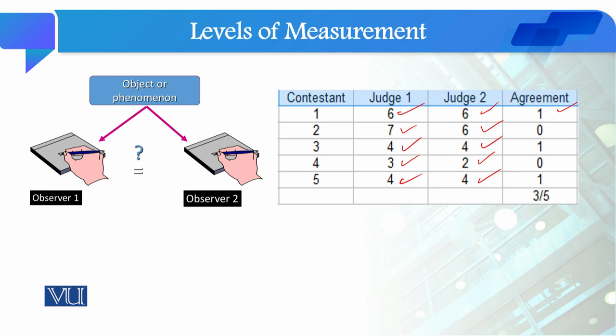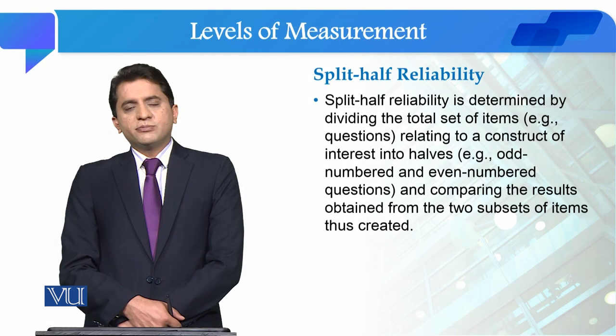If the agreement score is 1, we say the inter-rater reliability is low. If the agreement is 5, then we say the inter-rater reliability is very high. Now, what is split-half reliability?